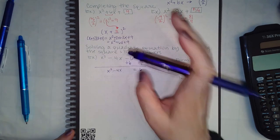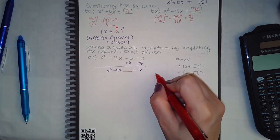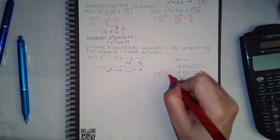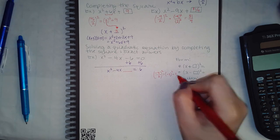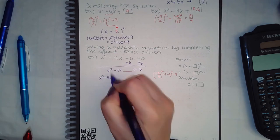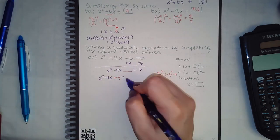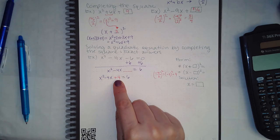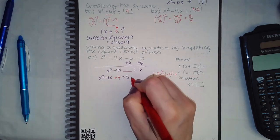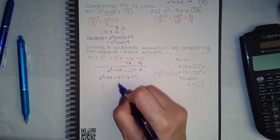My job is to figure out what the magic number is going to be to complete the square. Taking the coefficient of x, which is negative 4, divided by 2 and squared: (−4/2)² = (−2)² = 4. So I need to add 4 here to complete the square. But since this is an equation, I must also add 4 to the other side to keep it equivalent.